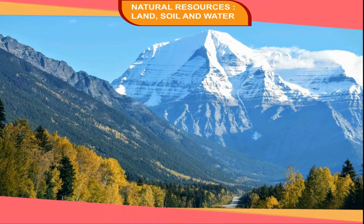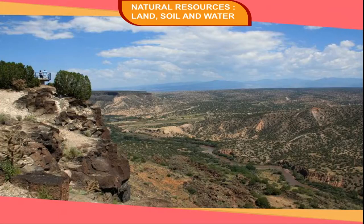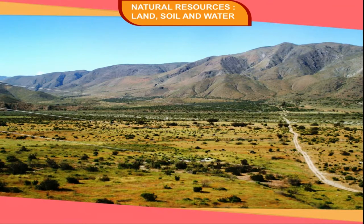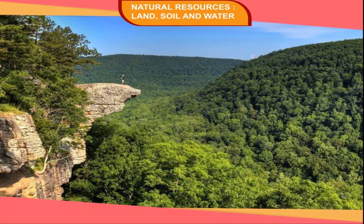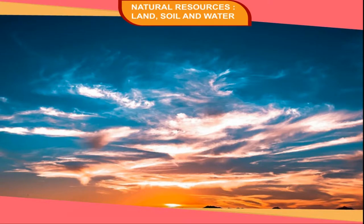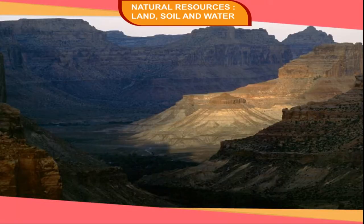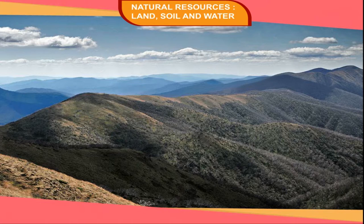Mountains are the high-altitude regions on the surface of the Earth. All major continents have some spectacular mountain ranges. These mountains have most useful forests and various types of vegetation. They control the climate. Many high-altitude mountains are covered with snow, which is the source of a number of perennial rivers.